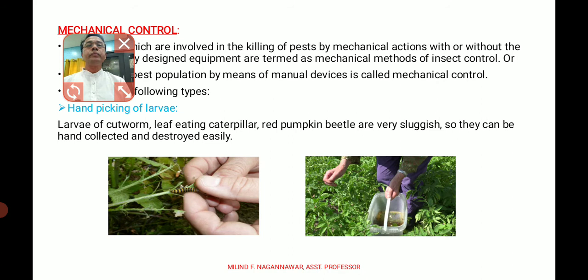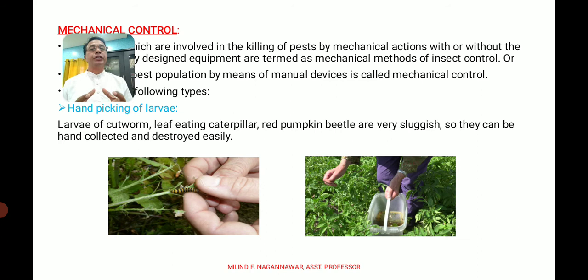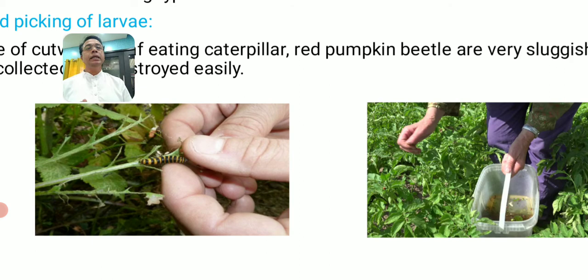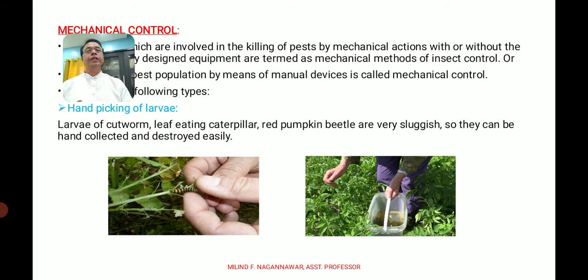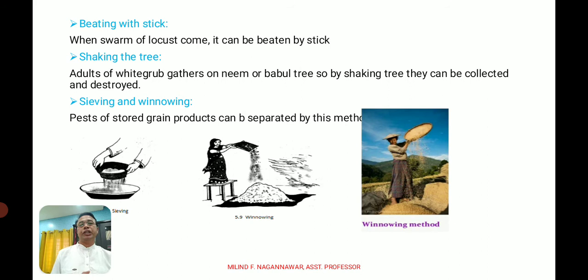In mechanical control, the first method is hand picking of larvae. Cut worms, leaf-eating caterpillars, and red pumpkin beetles are sluggish in their movement, making them easily visible. They can be picked by hand, collected, and destroyed. This is called hand picking of larvae.